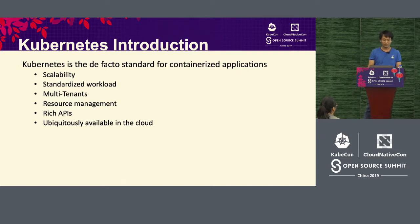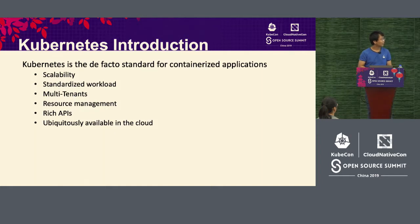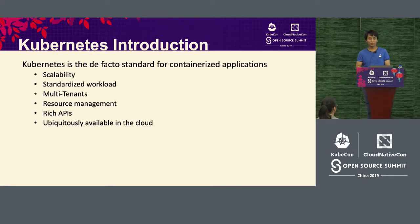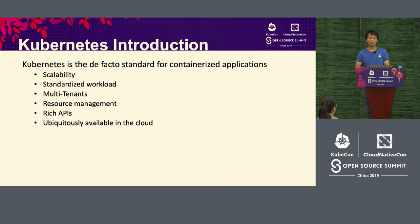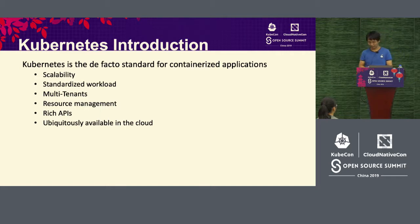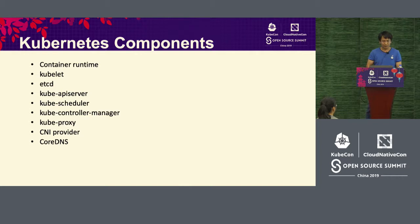We all know Kubernetes and its many advantages. In terms of scalability, it can reach 5,000 nodes and 300,000 containers, and the numbers keep increasing. It can also provide separation of resources, so it can easily realize multi-tenant applications. And whether it's public or private cloud, it can provide workloads across different environments, making migration straightforward.